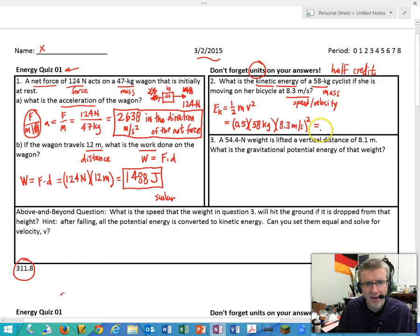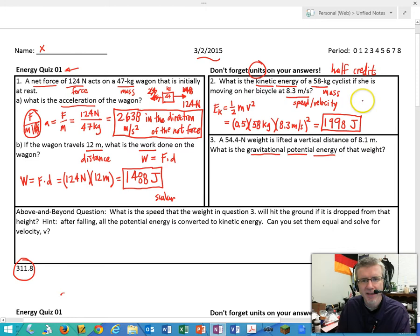So you could say 1,998 and that's joules. So energy, so work is in joules, kinetic energy is in joules. It turns out gravitational potential energy is in joules. That's J-O-U-L-E-S. So that was worth two points for the units and the number, this is two points units and number, this is two points units and number.